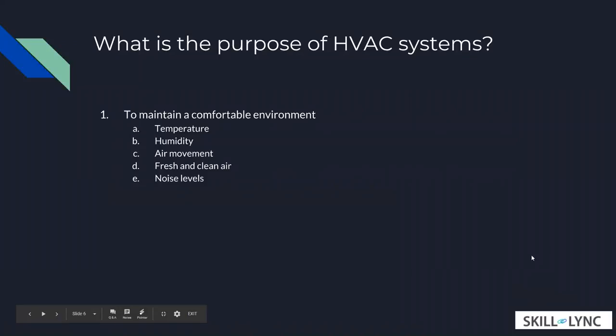What is the purpose of HVAC systems? It's mainly used to create a comfortable environment. The main purpose of an HVAC system is to make sure you have temperature, humidity, air movement, fresh and clean air, and noise levels controlled in any type of environment — whether it's an office, a mall, a stadium, or a passenger car. Anywhere you need to optimize these control parameters, you would call that an HVAC system.